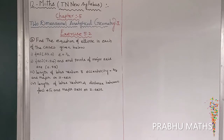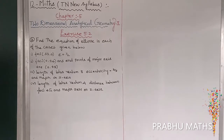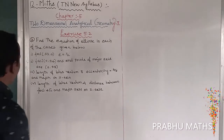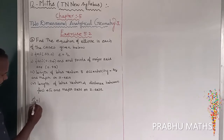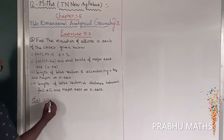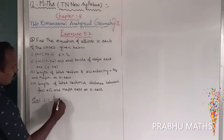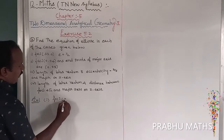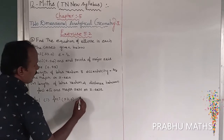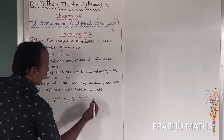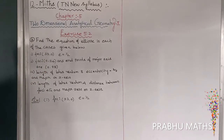X is 5.2, second sum. Find the equation of ellipse in each of the cases given. The first subdivision is: foci at plus or minus (3, 0), and eccentricity is equal to 1 by 2. That is the given data for this subdivision.